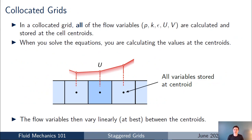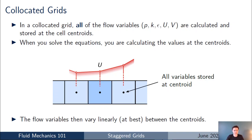Before introducing staggered grids, let me give a brief reminder of co-located grids. In a co-located grid — the type you'll be most used to seeing in modern CFD codes — all of the flow variables, so pressure, velocity, temperature, turbulent kinetic energy, specific dissipation rate, are calculated and solved at the cell centroids. Between the cell centroids, the flow variables vary linearly at best.